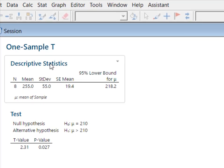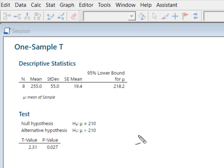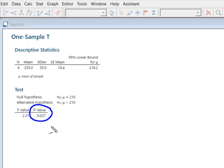Now Minitab has run my one-sample t-test for me, and what I'm after here, because I'm using a p-value approach, is I'm looking right down here at the p-value that was calculated by Minitab. I'm going to take that back and finish running my test and draw my conclusion.